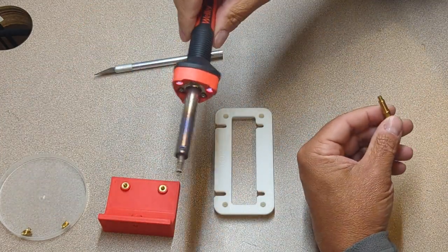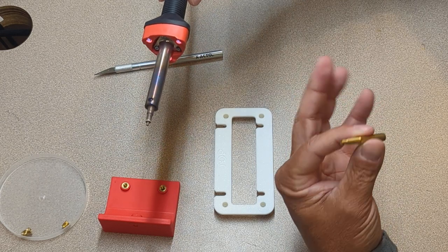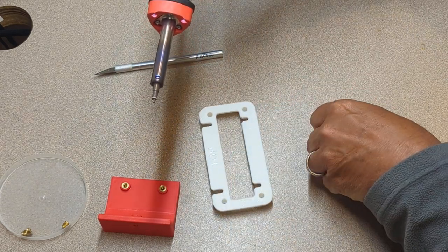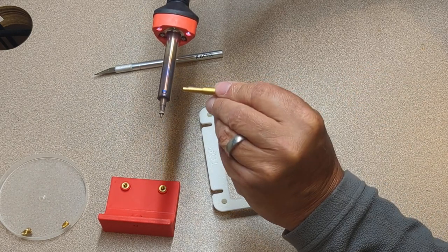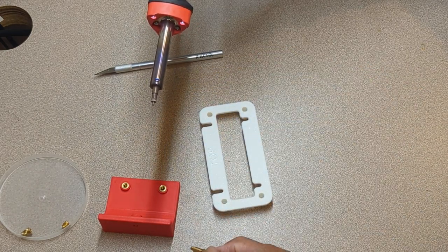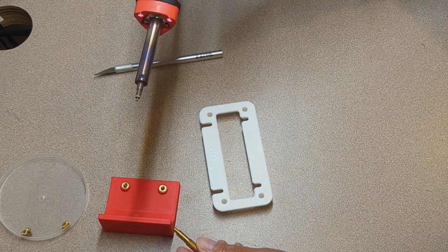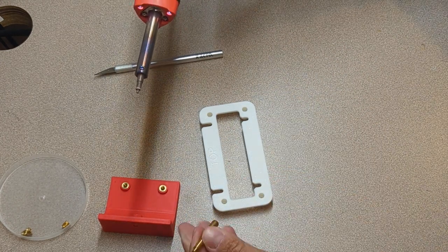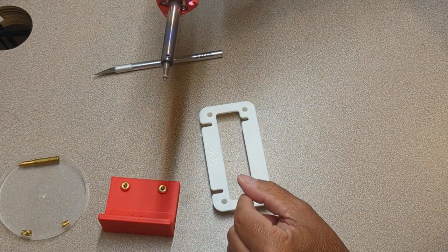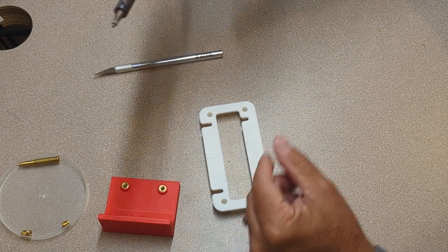You're gonna need a soldering iron. This is just a basic Weller. The one thing that you really want to make sure your soldering iron has is one of these little set screws because what you're gonna do is you're gonna loosen that, pull out your soldering tip, make sure the soldering iron is cool and then replace the soldering tip with one of these heat set insert tools and tighten the screw back up.